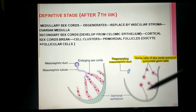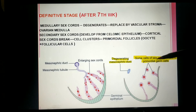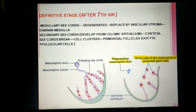These cortical sex cords are fragmented or broken down and arranged in the form of clusters. In the center of each cluster, a primordial germ cell is arranged, surrounded by follicular cells. The primordial germ cell will form the oogonium or oocyte. The follicular cells are derived from the sex cord cells — specifically the cortical sex cord cells arising from the coelomic epithelium.